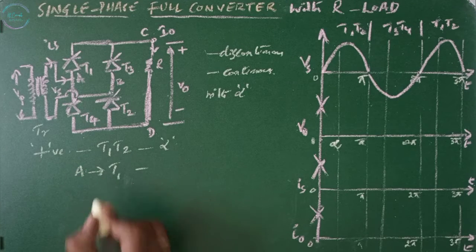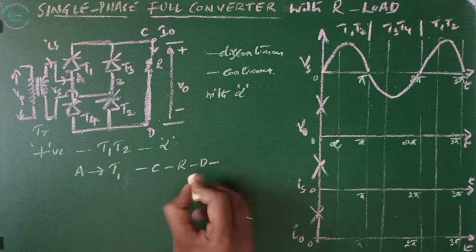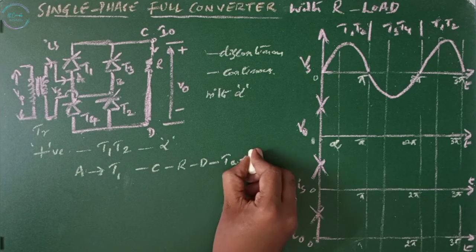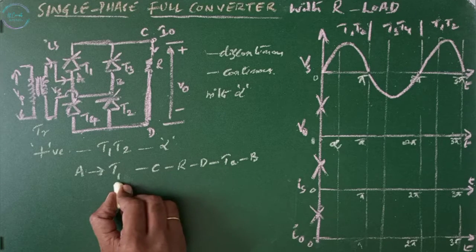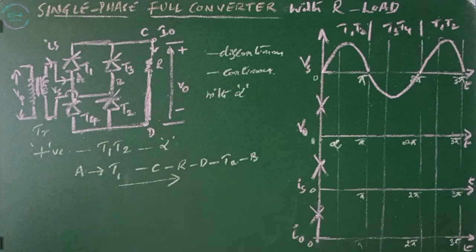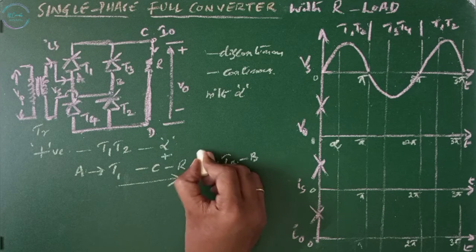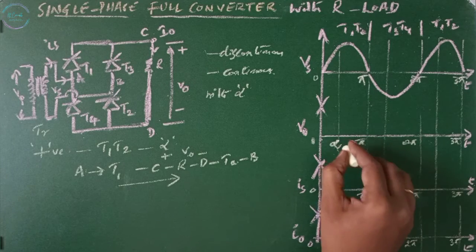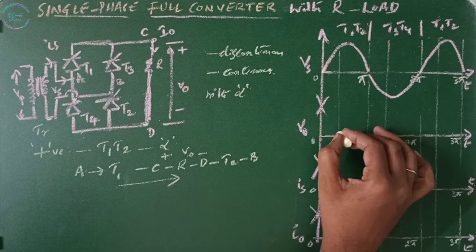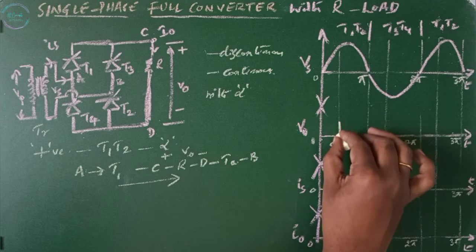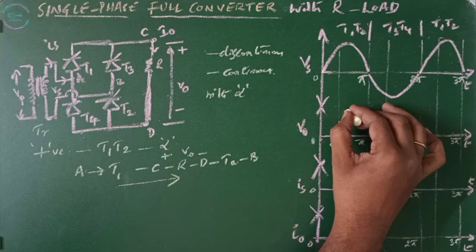The current flows from A through thyristor T1 to terminal C, through load R to terminal D, back through T2, and back to B, where A-B are the input terminals. The current flows from C to D — C is the positive terminal and D is the negative terminal, giving output voltage V0. By turning on the thyristors at angle alpha, the input voltage present at alpha appears across the output, and the output follows the input.